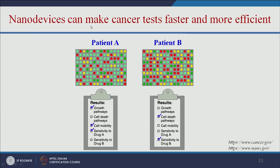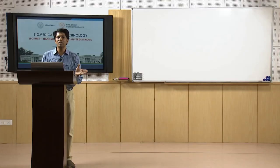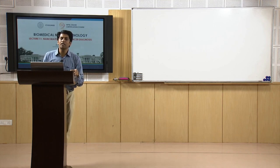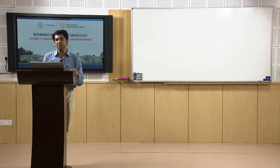Nanodevices can make cancer tests faster and more efficient. For patient A, growth pathways are okay, cell mobility is okay, and he is sensitive to drug A. For patient B, he is sensitive to drug B. Even though both have prostate cancer, they express different biomarkers and have different needs. We can give drugs specific to each patient's need — that is called personalized medicine.